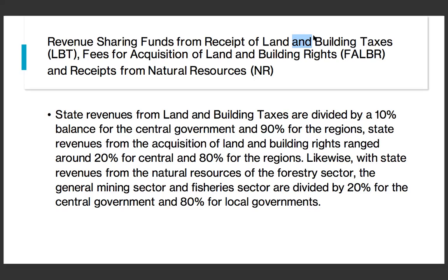We can conclude that the formulation of the balance fund between the central and regional government, as effective so far, has not reflected a sense of justice. This can inhibit the occurrence of even distribution between regions. The formula of the revenue sharing fund can be changed, and based on the fact of regions that produce natural resources, with the consideration that there is development inequality, those regions should get a larger fund managed by the local government, so they will be more aware of what conditions and needs are required, and fund management can be more effective and efficient.